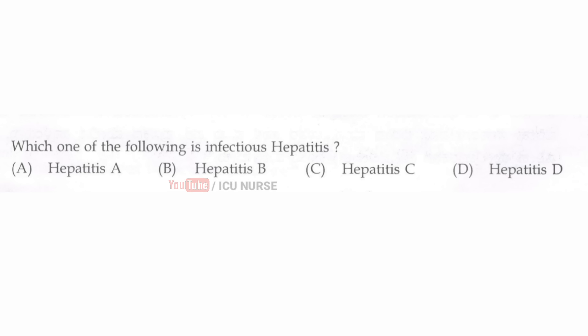Which of the following is infectious hepatitis? The correct answer is A, hepatitis A, which is called infectious hepatitis. It is caused by the hepatitis A virus that results in inflammation of the liver.